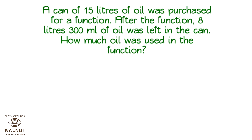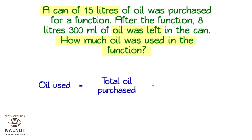A can of 15 litres of oil was purchased for a function. After the function, 8 litres 300 millilitres of oil was left in the can. How much oil was used in the function? What do we have to find out? The oil used in the function. What do we know? The oil we had at the beginning and the oil left in the can. So, oil used in the function is equal to total oil purchased minus the oil left in the can.